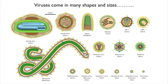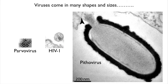Viruses actually come in many different shapes and sizes. Here's a cartoon representation of many viruses. Some of them you'll have heard of. This big snake-like one is called Ebola — very deadly. Rabies, also quite deadly. Measles has been in the news recently, and HIV-1. Here are pictures of real viruses: a tiny virus called parvovirus, HIV-1, and what we call a giant virus, pithovirus, that infects amoeba. This scale bar is 200 nanometers — about one thousandth of the thickness of a human cell.